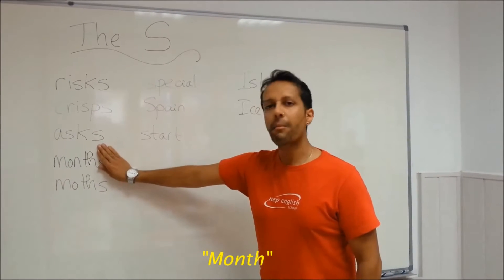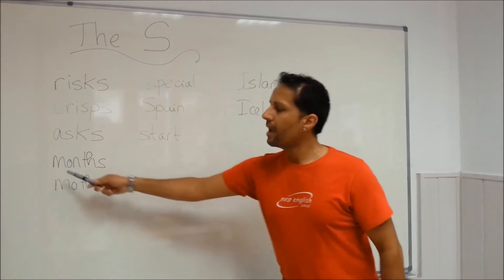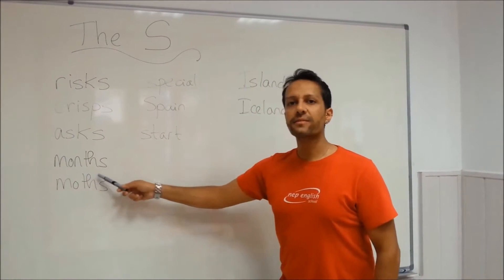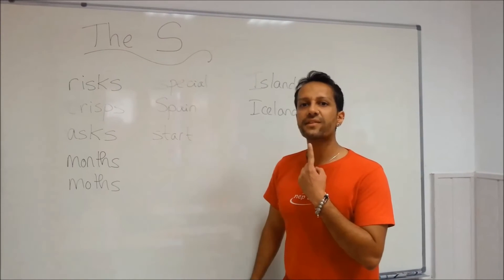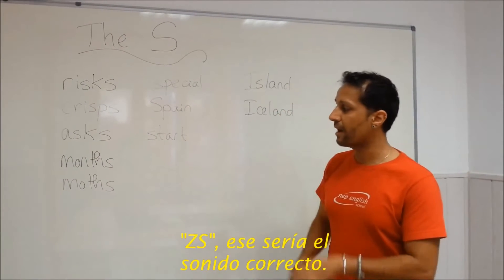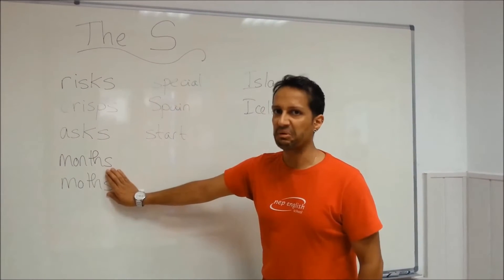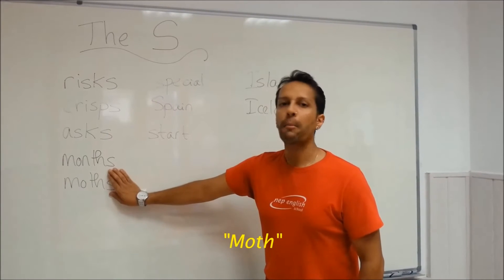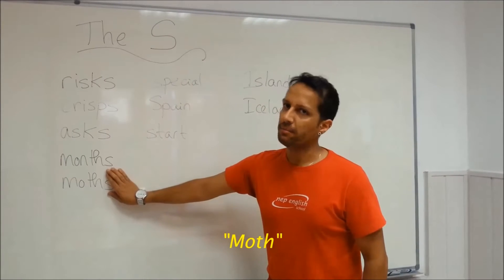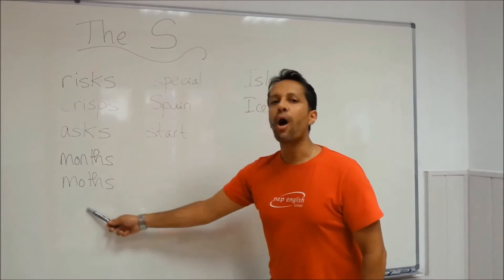Month — mes. The plural is 'months' — meses. The correct sound is 'ths.' And 'moth' — bolilla. The plural is 'moths.' Make sure you pronounce that final S sound correctly.